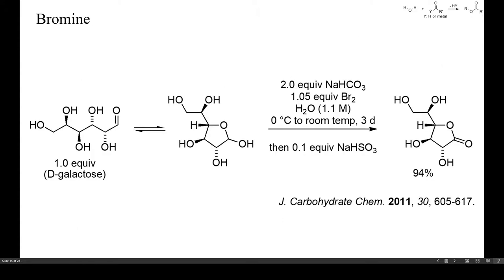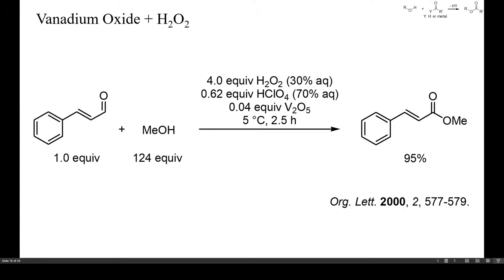Some carbohydrates can be oxidized to lactones, for instance with bromine, as in this example. Still another catalyst for this reaction is vanadium oxide in combination with hydrogen peroxide. In this case, the reaction conditions were strongly acidic.